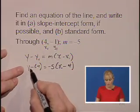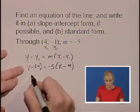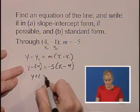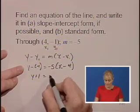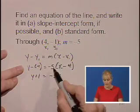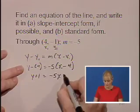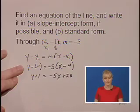Let's clean up both sides. y minus a -1 becomes y plus 1. Let's do some distributive property on the right. -5 times x is -5x, -5 times -4 is positive 20.